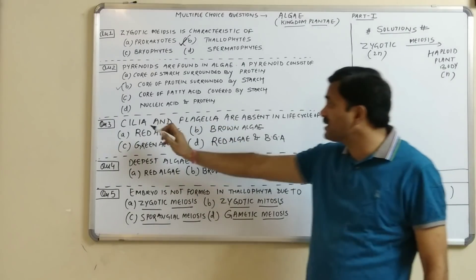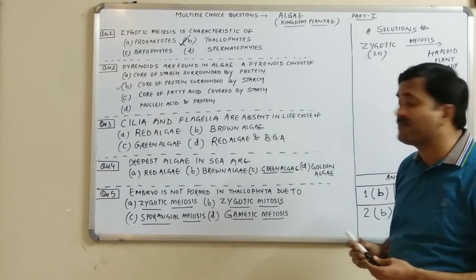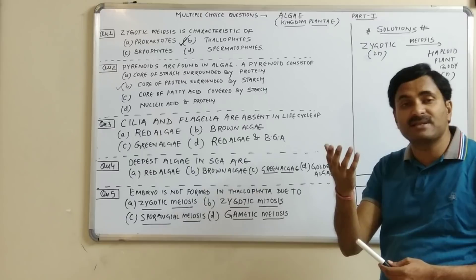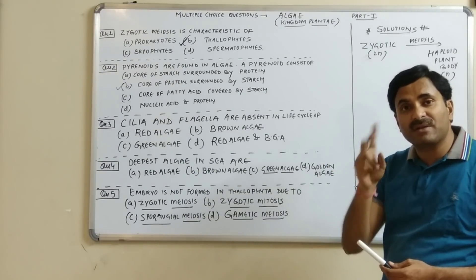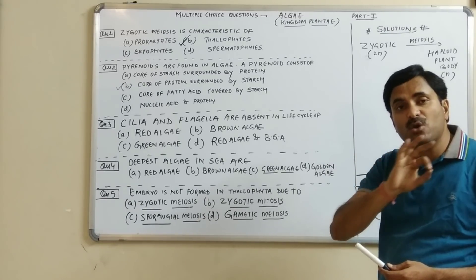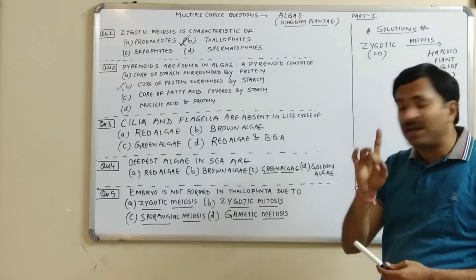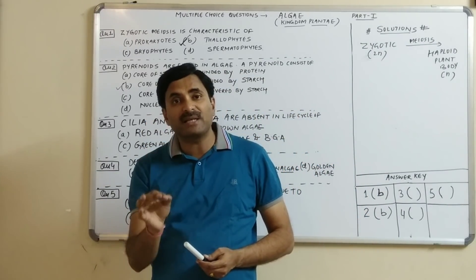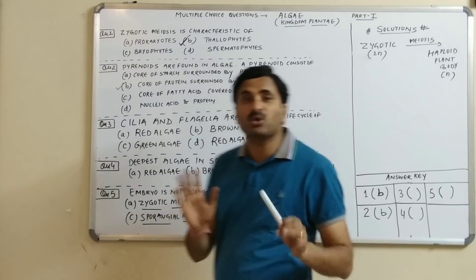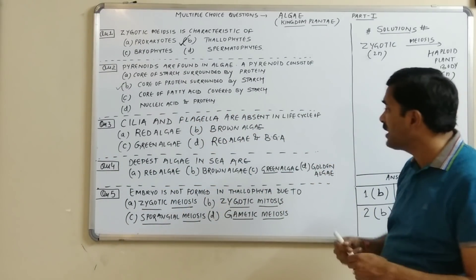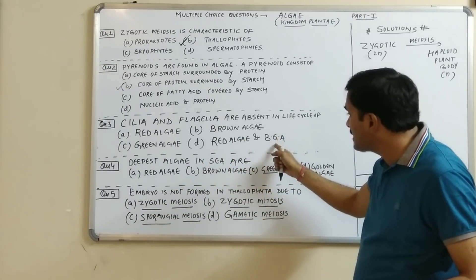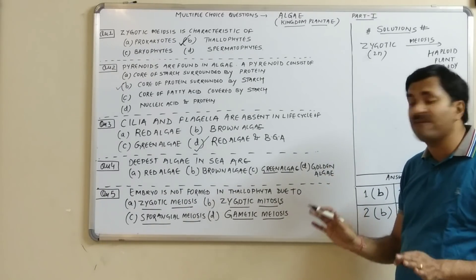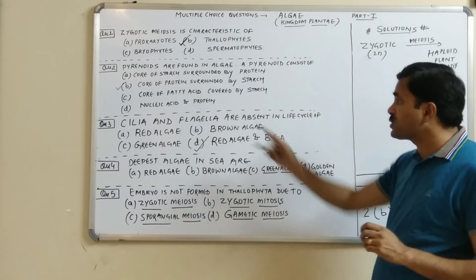Question number three: cilia and flagella are absent in the life cycle of which algae? There are two classes of algae that do not have any cilia and flagella — red algae, known as Rhodophyceae, and blue-green algae, known as Cyanobacteria. All other classes have cilia and flagella, so question number three has answer D.